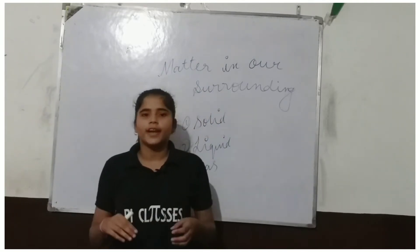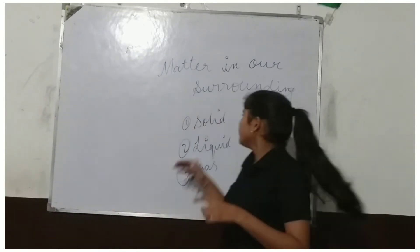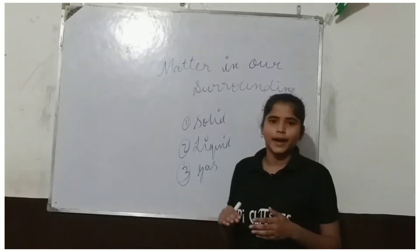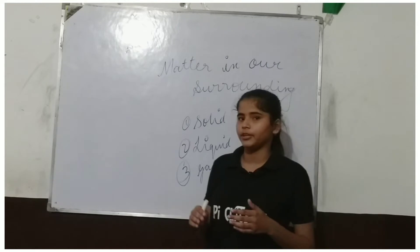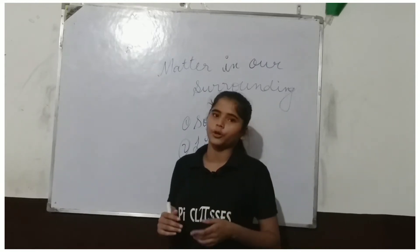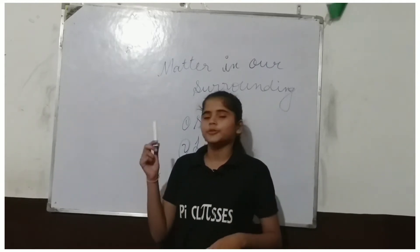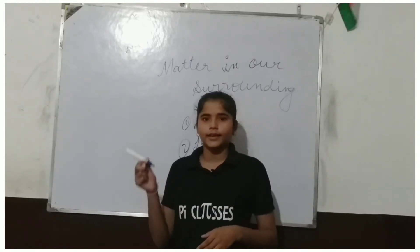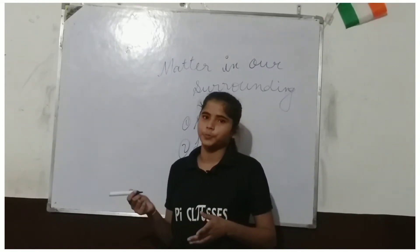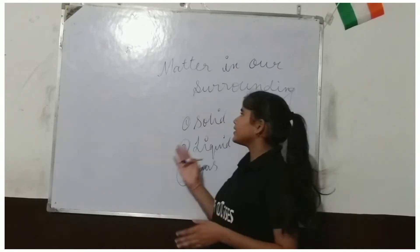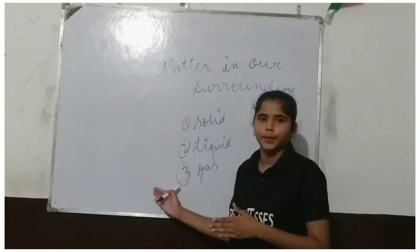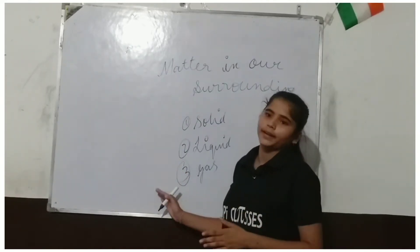Now a question may arise — for solid, yes, we can easily say it is matter because it has mass and occupies space. This marker is a solid — it has mass and occupies space. This board is a solid — it has mass and occupies space. So both are matter.